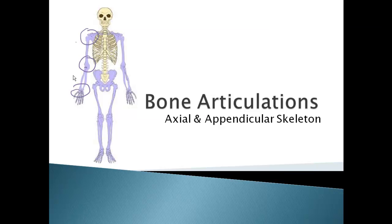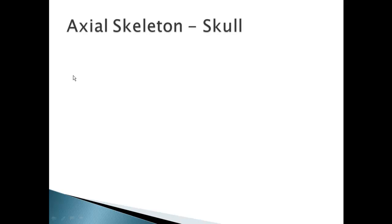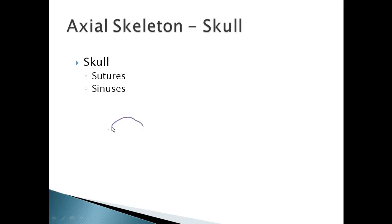To begin, let's start from the top down with the axial skeleton and the skull. The skull really has two major features for articulations, and the first are sutures. When you're an adult, looking from the top down, this is your frontal bone, and it forms a suture or a joint with the parietal bone. Those sutures are fused bones together that allow absolutely no movement.